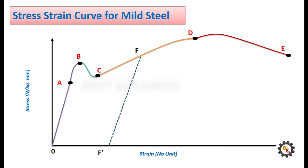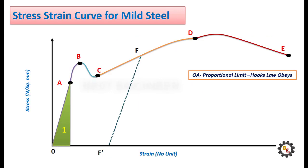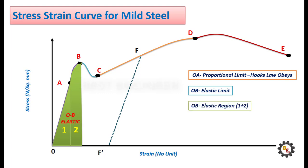In stress-strain curves, first O to A proportional limit region. This obeys Hooke's law. O to B is elastic limit region. Within this region material will regain its original shape.